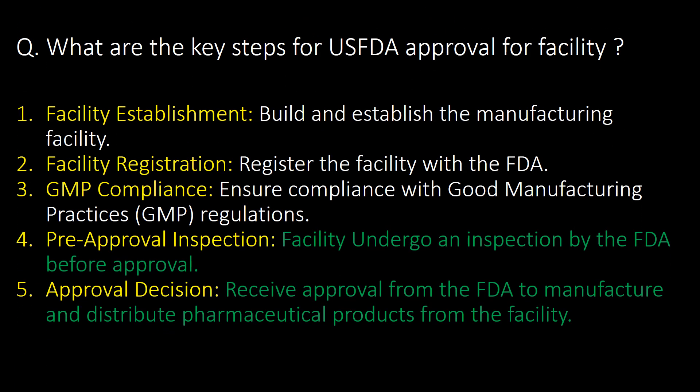What are the key steps for USFDA approval for a facility? There are 5 key steps: Step 1 is Facility Establishment, Step 2 is Facility Registration, Step 3 is GMP Compliance, Step 4 is Pre-Approval Inspection — where the facility undergoes an inspection by the FDA before approval — and Step 5 is the Approval Decision.